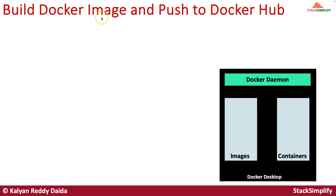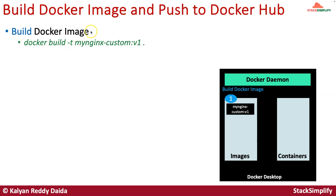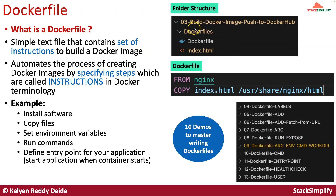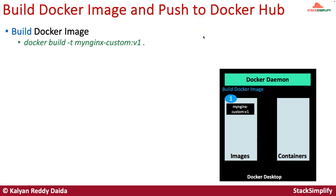To build a docker image we are going to use the docker build command. The docker image name we are going to provide is 'my-nginx-custom' with the tag v1. We will go to the docker files folder where the Dockerfile is present and run: docker build -t my-nginx-custom:v1 . — where the dot means the current directory where your Dockerfile is present.